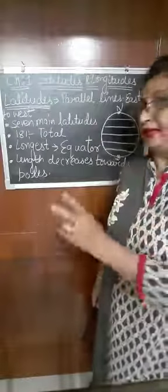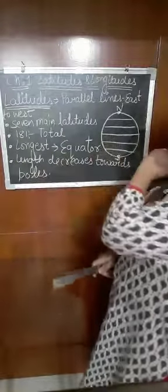But the total number of latitudes is 181. The equator divides the earth into upper and lower parts. The longest latitude is the equator. Above the equator there are 90 latitudes, and below the equator there are 90 latitudes, so 90 plus 90 equals 180. Total latitudes are 180, and the longest latitude is the equator.